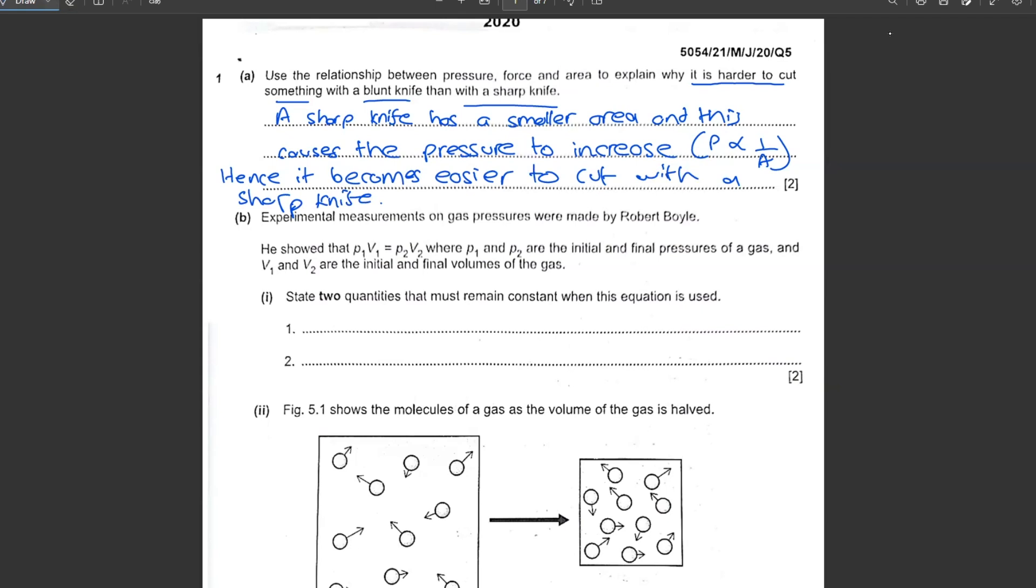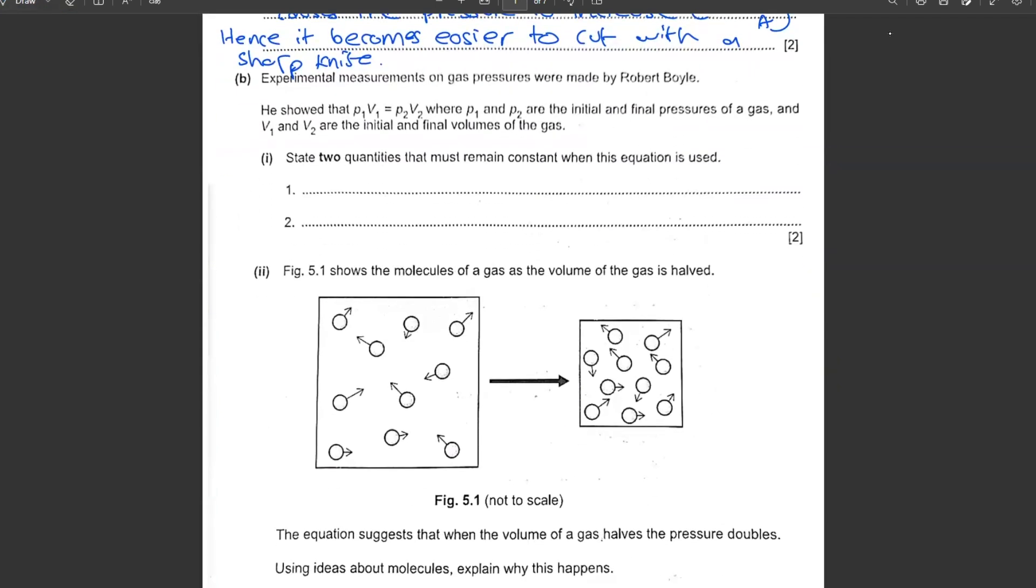Experimental measurements on gas pressures were made by Robert Boyle. He showed that P1V1 is equal to P2V2. State two quantities that must remain constant when this equation is used. Temperature must remain constant. And what is the second thing? Mass of the gas must remain constant.